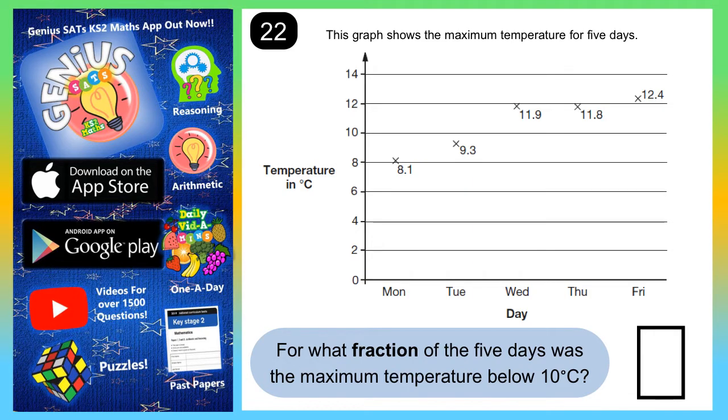Well, we've got five days to choose from, so it's going to be out of five. You can put the bottom of your fraction in straight away, out of five. The number on top of the fraction, the numerator, is just going to be how many of those days is below 10.